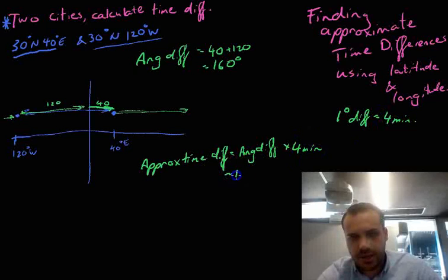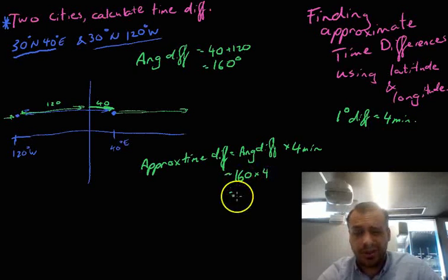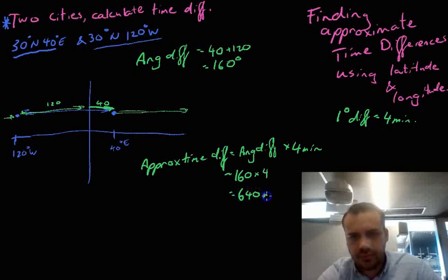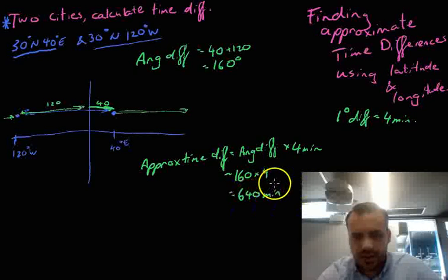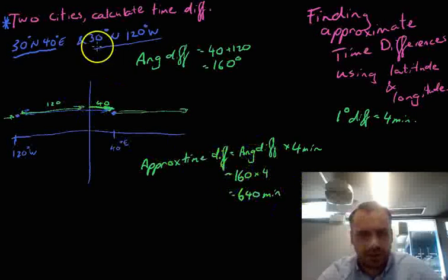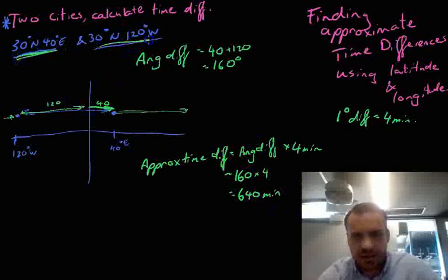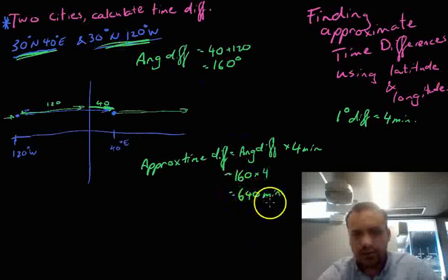Okay, so that's going to be equal to 160 times four. That's 640. Now that's 640 minutes. So the approximate time difference between this city and this city is 640 minutes.